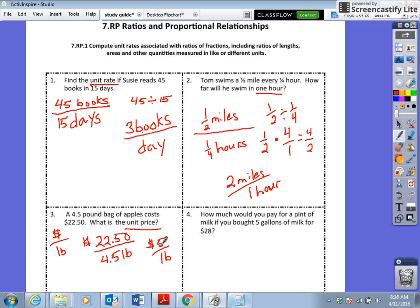How much would you pay for a pint of milk if you bought five gallons of milk for $28? Okay guys, this is where fourth grade comes back to bite you, because that's where you learned all this volume. If you cannot remember how many pints in a gallon or whatnot, you can always remember you have Gallonia, the land of Gallonia. In the land of Gallonia, there were four queens.